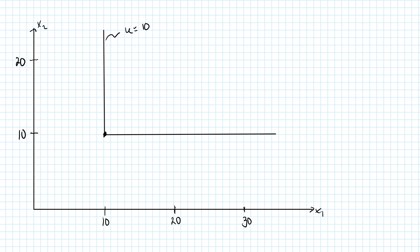So how do we do that? Well, if we look at some of the bundles on the indifference curve, we have (10, 10) here at the corner, here we have a bundle which is (20, 10), and here we have a bundle which is (10, 20).